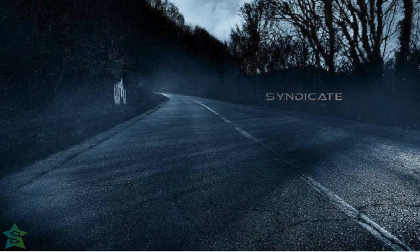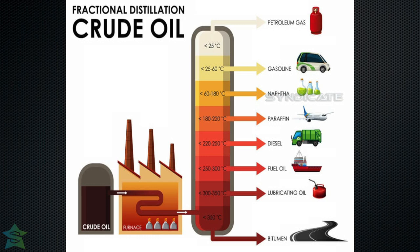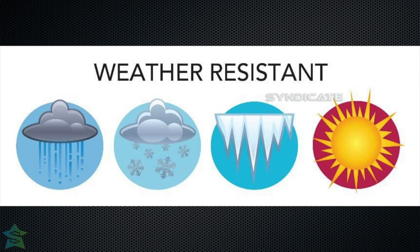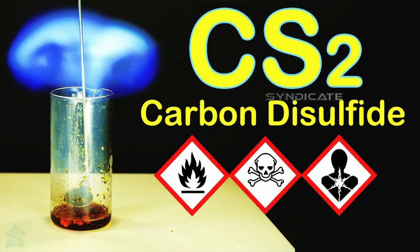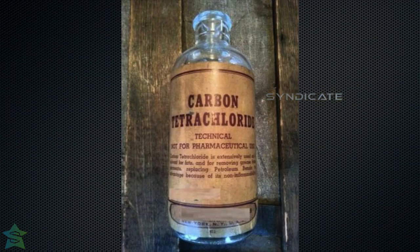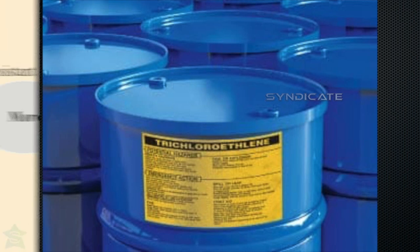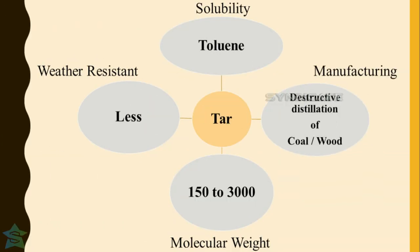Bitumen and tar are two distinctly different materials of different origin with different physical and chemical characteristics. Bitumen is manufactured by fractional distillation of petroleum. The molecular weight of bitumen is higher than that of tar, which provides higher stiffness. Bitumen is more weather resistant and has less temperature susceptibility. Bitumen is soluble in carbon disulfide, carbon tetrachloride, and trichloroethylene — a test that denotes the purity of bitumen.